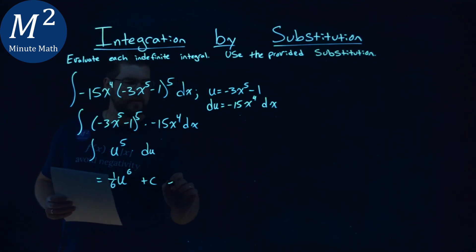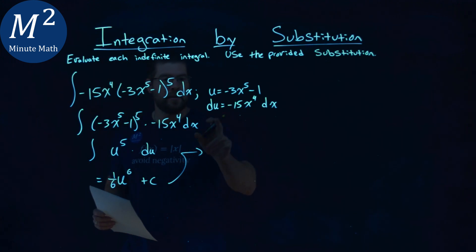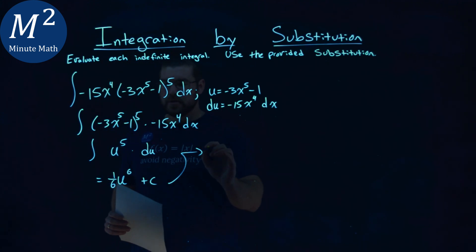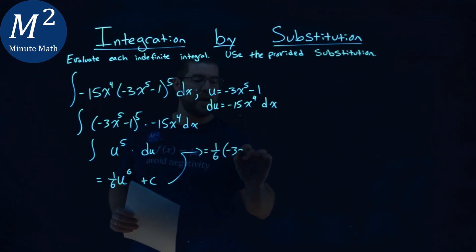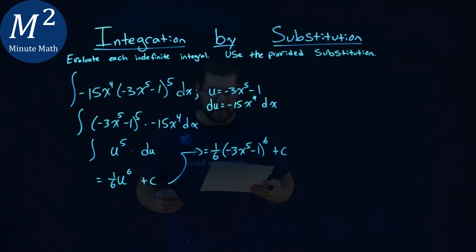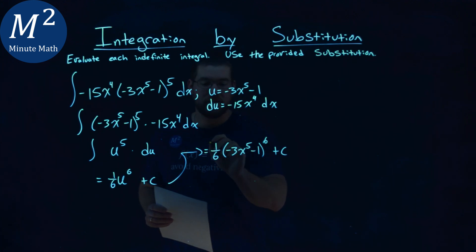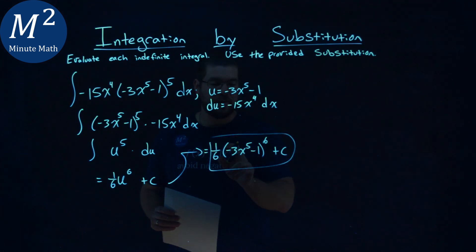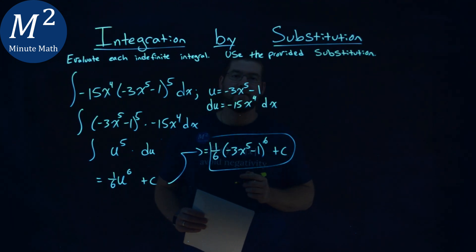It is now, at this point, I want to plug back in my u value. So this is equal to my 1 sixth times my u value, which was negative 3x to the fifth power minus 1, all to the sixth power plus c. And that is it. My final answer here is just 1 sixth times negative 3x to the fifth power minus 1 to the sixth power plus c.